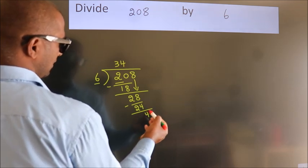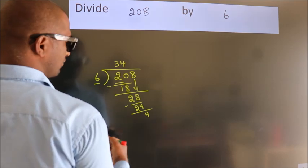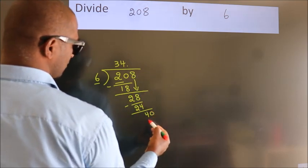After this, no more numbers to bring down. Now, what we do is put a dot and take 0. So, 40.